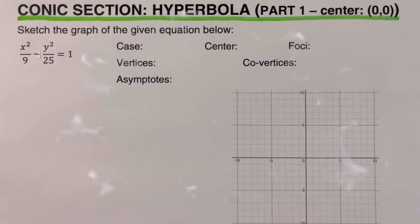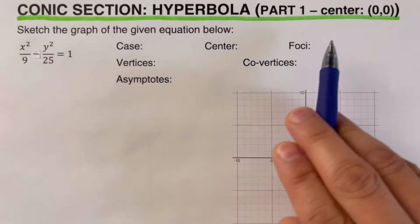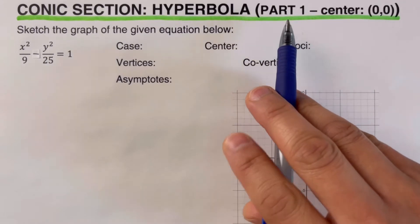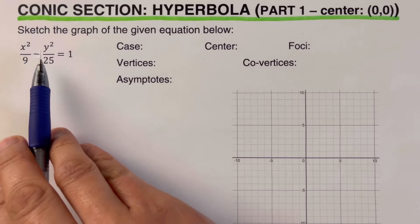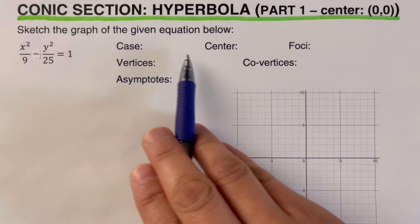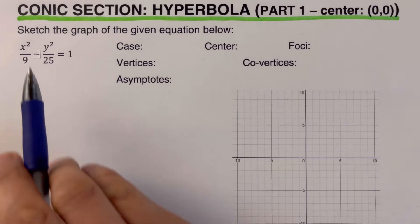Hello everyone. This video will focus on conic sections, specifically on hyperbola with center at zero zero, or at the point of origin. This is the first part. We are given the standard equation of a hyperbola, and we're supposed to sketch the graph and determine the values for each variable. Please feel free to check out the description box below for the link to the other series of topics related to hyperbola with center at zero zero.